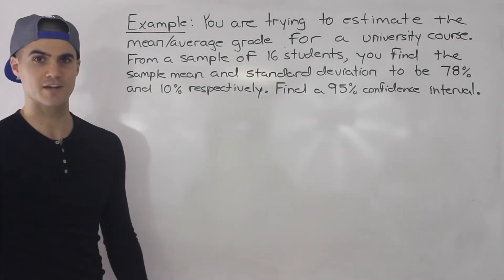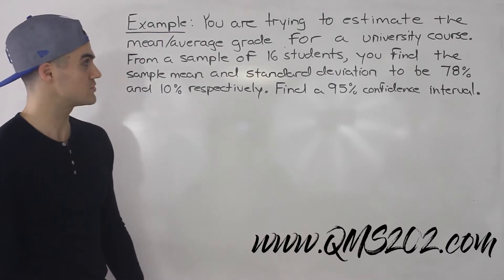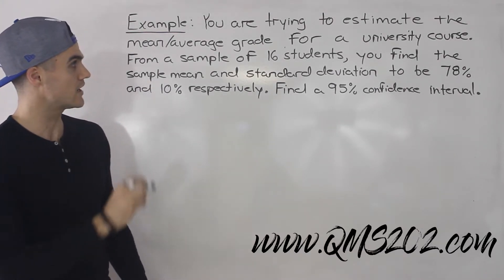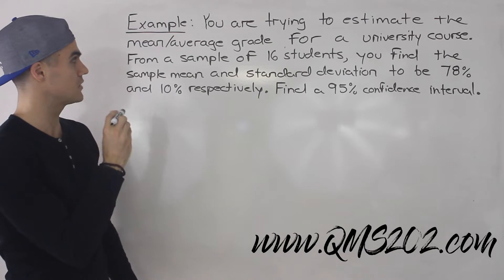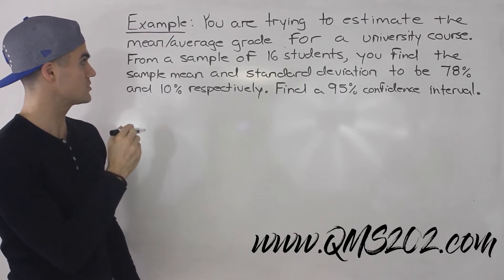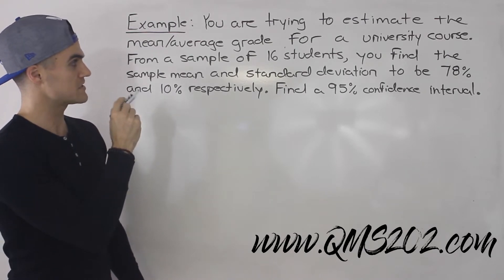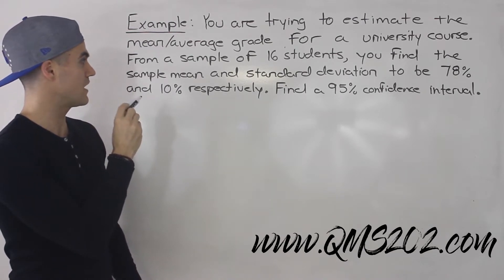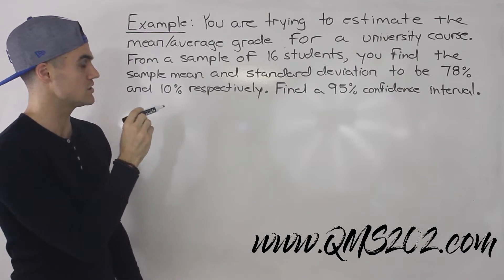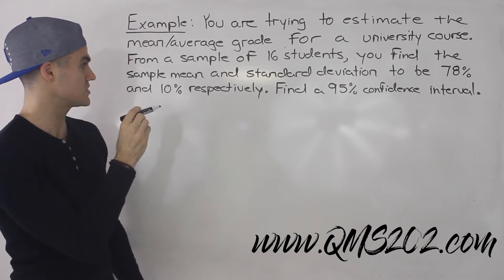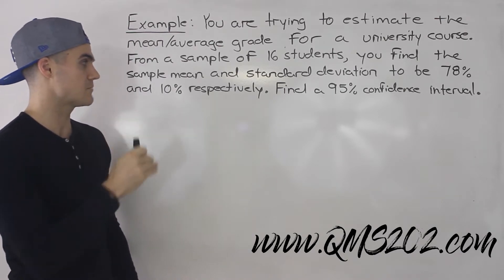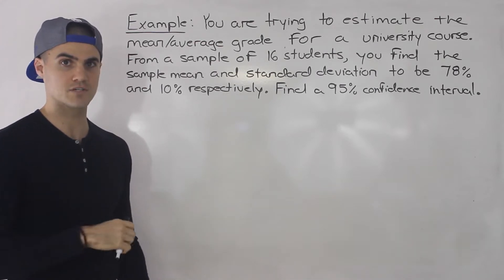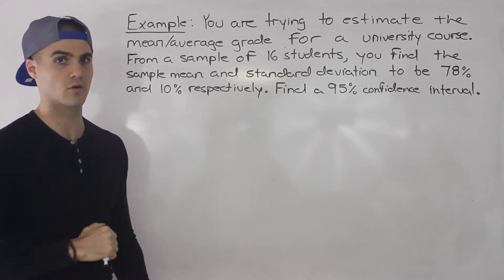Welcome back. Patrick here, moving on to the next example. So you're trying to estimate the mean or average grade for a university course. From a sample of 16 students, you find the sample mean and standard deviation to be 78% and 10% respectively. And you have to find a 95% confidence interval.